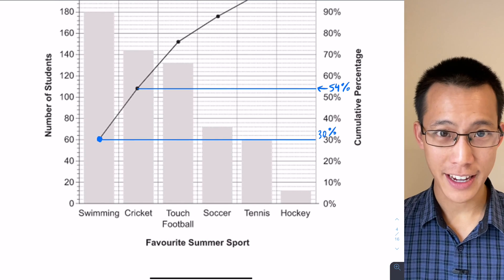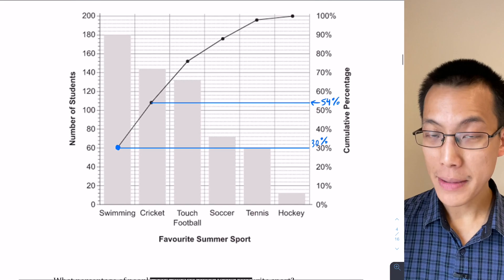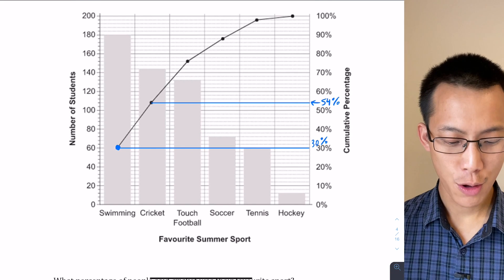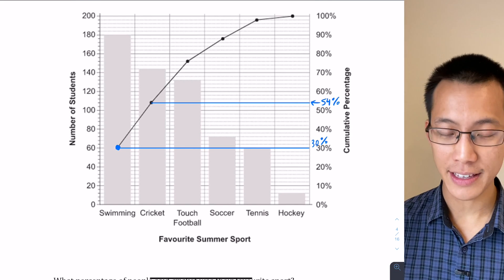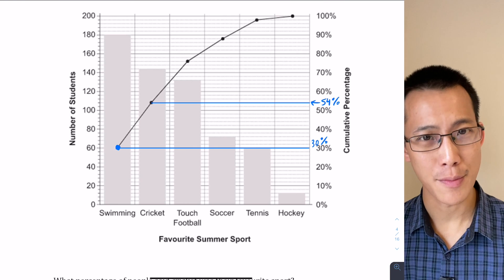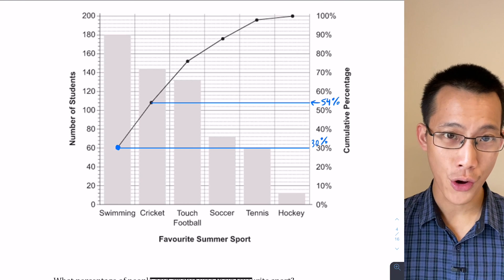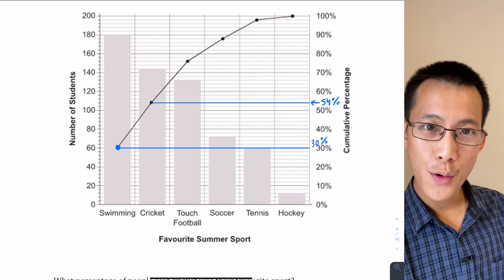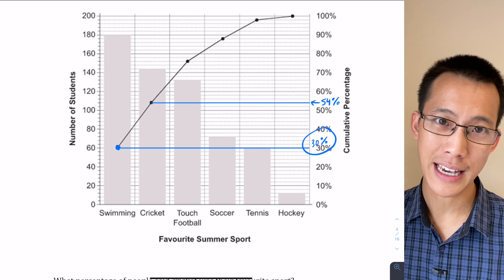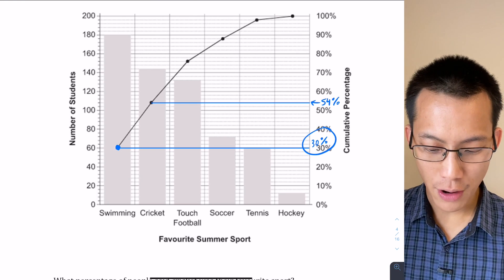And I compare that to 30%. So if I include swimming and cricket—because cumulative, remember—that means there are 54% of the people who have swimming or cricket as their favorite. I'm not interested in swimming or cricket, I'm interested in cricket only, so I'm going to remove all of the swimming people out of there, which is the 30% that we calculated just now.